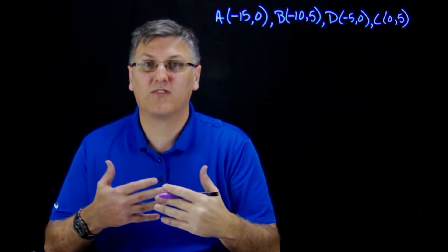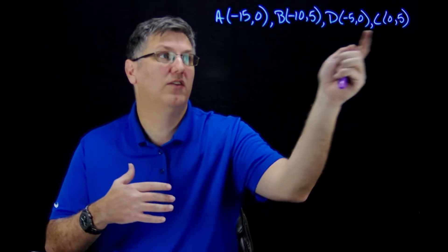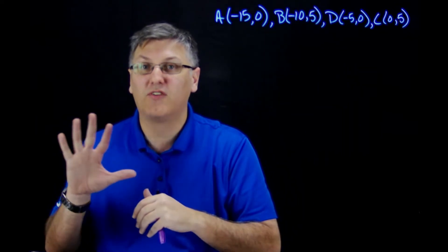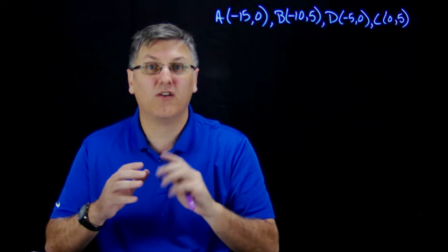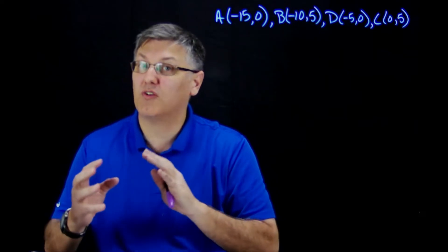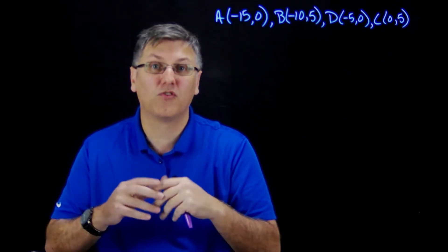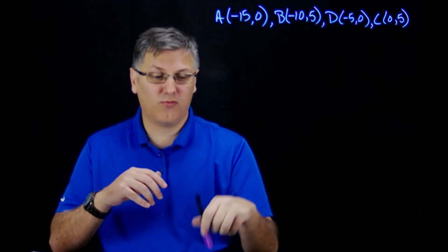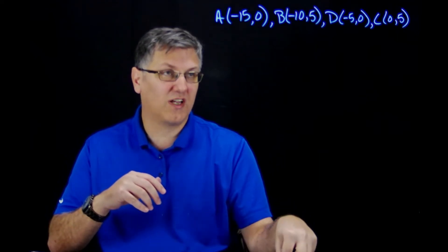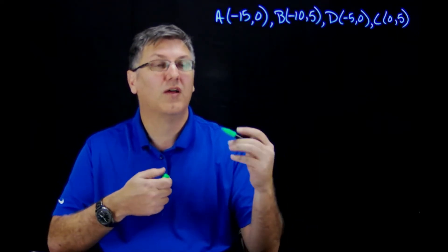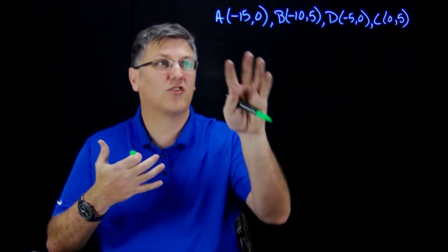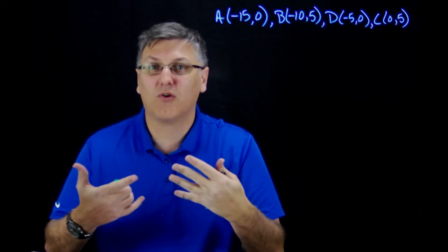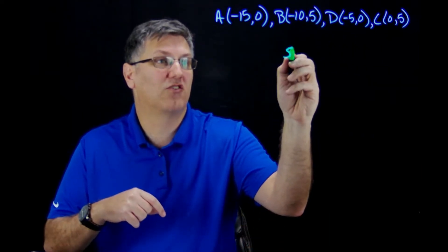We're going to look and see if quadrilateral ABCD is actually a parallelogram. We have five tests we can choose from — we can use slope formulas, distance formulas, or even the midpoint formula. What I'm going to do first is actually sketch this to see what's going on. It makes my life easier since it's hard to visualize with just points.